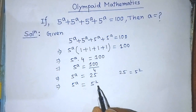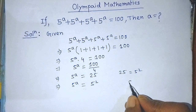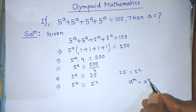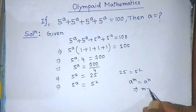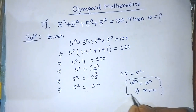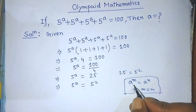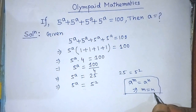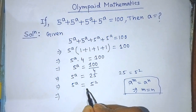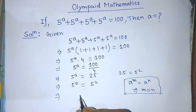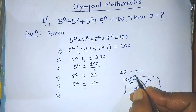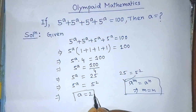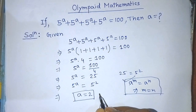To find the value of A from this equation, we apply the formula: if A to the power M equals A to the power N, then M equals N. In this equation, the bases on both sides are the same. So we cancel the base and compare the powers. According to this formula, A is equal to 2. So the value of A is 2, and this is our final answer.